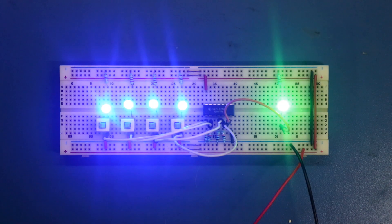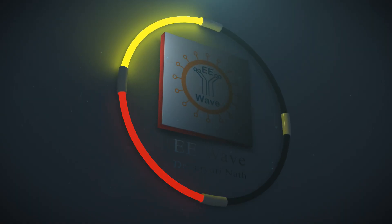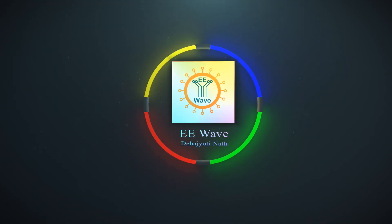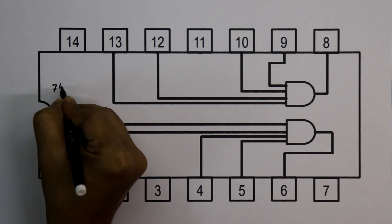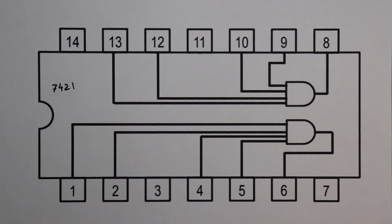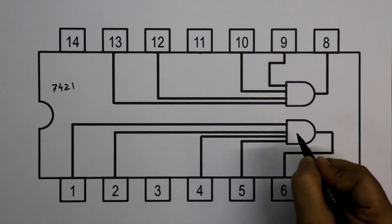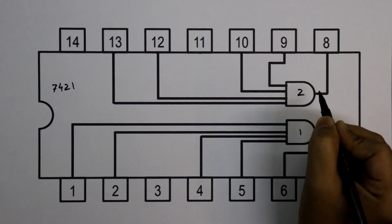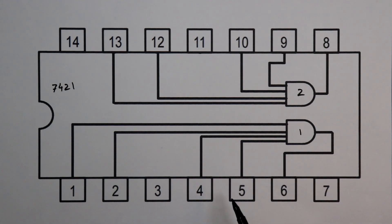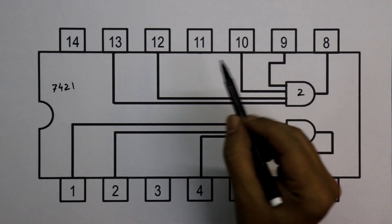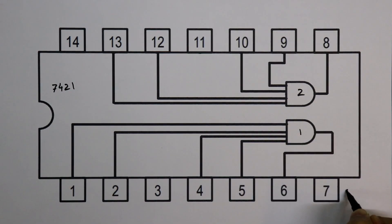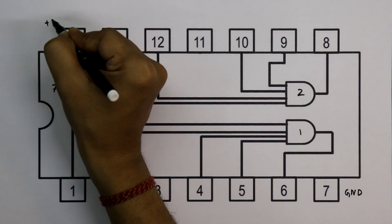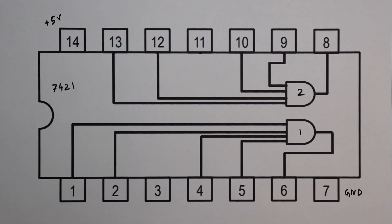So let's get started. This is the pin diagram of the IC 7421, it is 4-input AND gate IC. This is gate 1 and gate 2. For gate 1, pin number 1, 2, 4, 5 are the inputs and pin number 6 is output. For gate 2, pin number 9, 10, 12, and 13 are the inputs and pin number 8 is output. Pin number 7 is ground and pin number 14 is plus 5 volt pin.